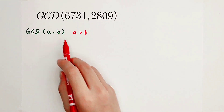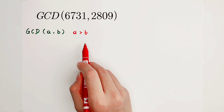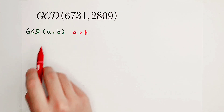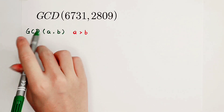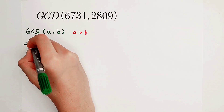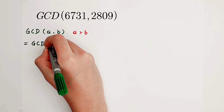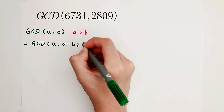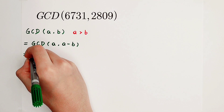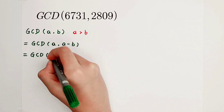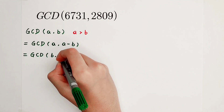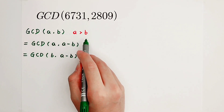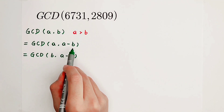Now we let A be greater than B. A can also be equal to B — in that case, the greatest common divisor of A and B is just A or B. The formula is: the greatest common divisor of A and B is equal to the greatest common divisor of A and A minus B. It is also equal to the greatest common divisor of B and A minus B. Why should A be greater than B? So that A minus B is positive.